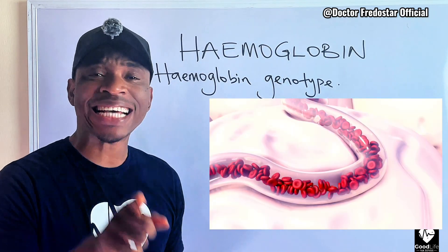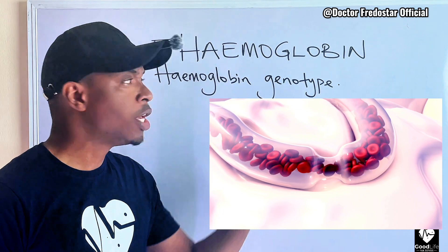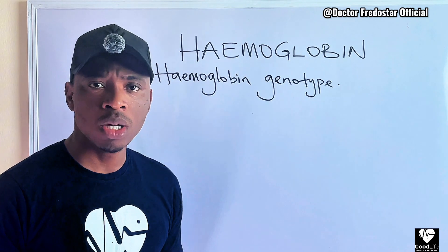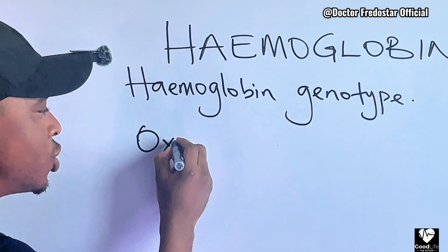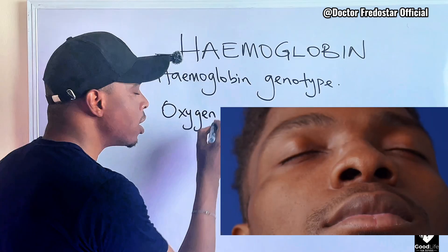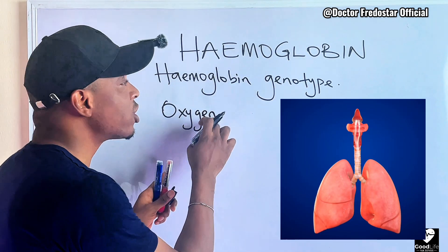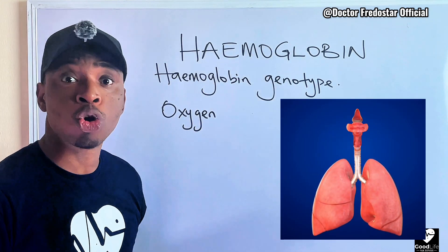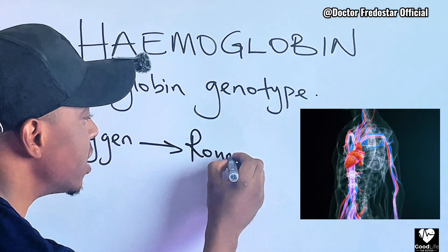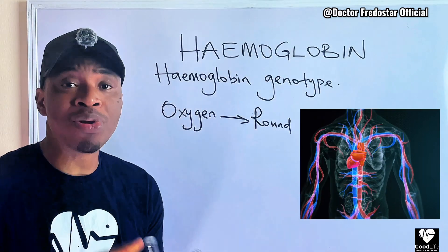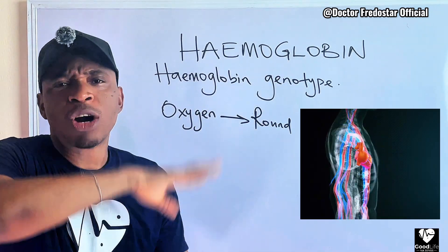Every human being has inside their blood what they call hemoglobin. This hemoglobin, what does it do? It helps you carry oxygen. So when you breathe in oxygen, this oxygen meets with your hemoglobin, and your hemoglobin carries the oxygen around your body.